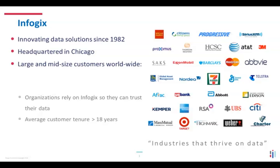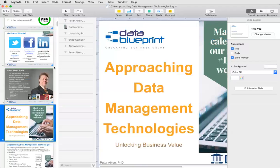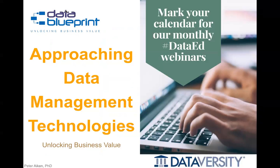Let me introduce our speaker for today, Peter Aiken. Peter is an internationally recognized data management thought leader with more than 30 years of experience. He is the founding director of Data Blueprint, has written dozens of articles and 11 books — the most recent being Your Data Strategy. Peter has experience with more than 500 data management practices in 20 countries, and has worked with organizations including the U.S. Department of Defense, Deutsche Bank, Nokia, Wells Fargo, the Commonwealth of Virginia, and Walmart.